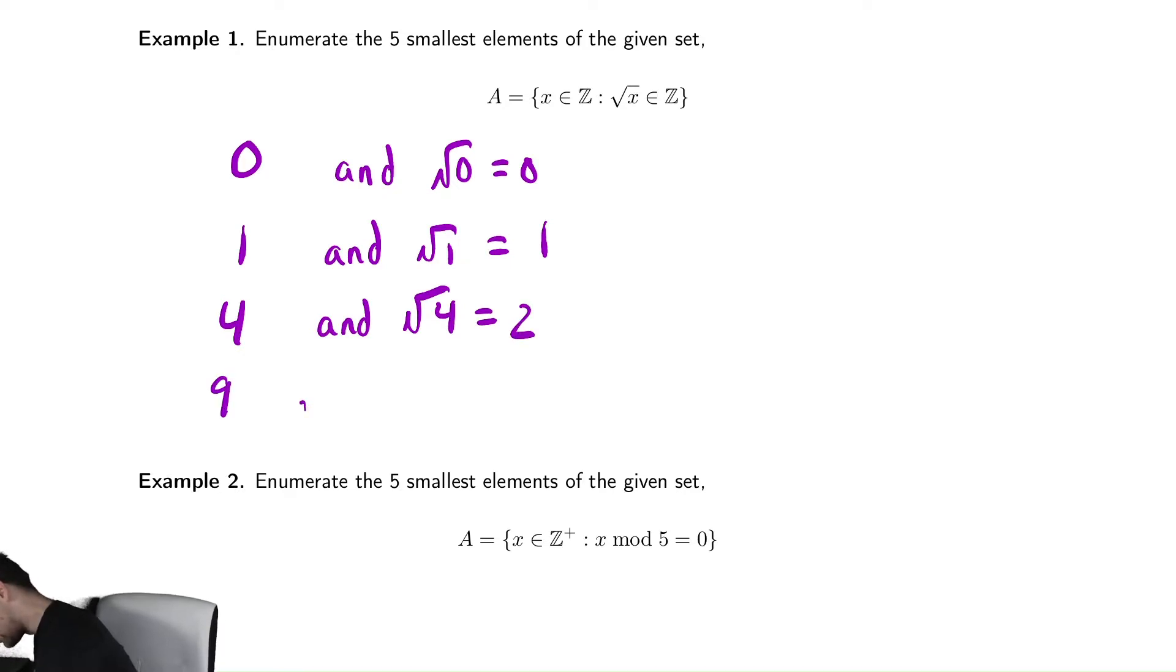Nine and radical nine. And finally, we have five—sorry, twenty-five—and radical twenty-five is equal to five.